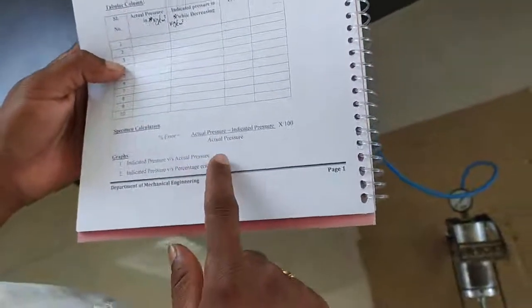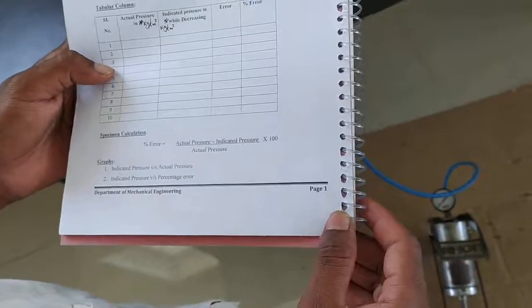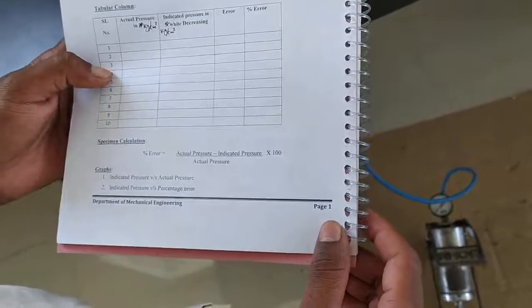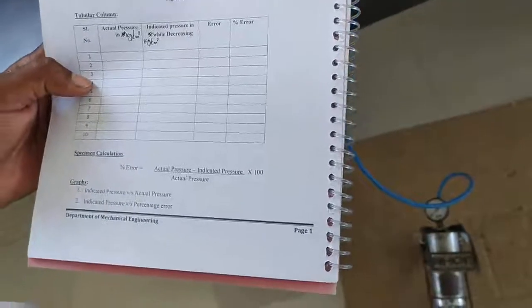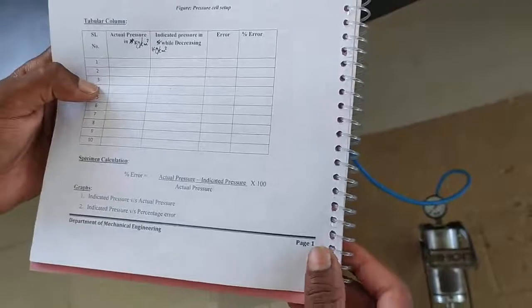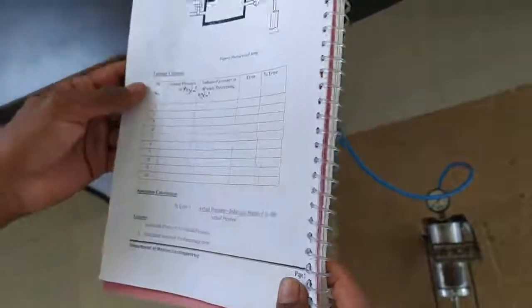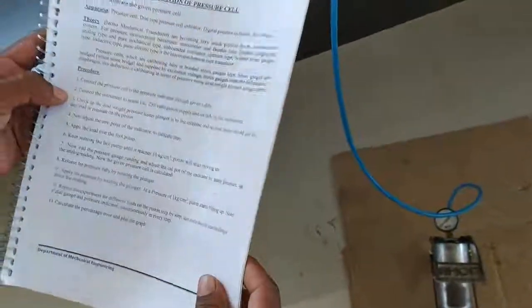Percentage of error can be calculated using actual pressure minus indicated pressure divided by actual pressure into 100. We have to draw the graph for indicated pressure versus actual pressure and indicated pressure versus percentage error. This completes the calibration of pressure cell.